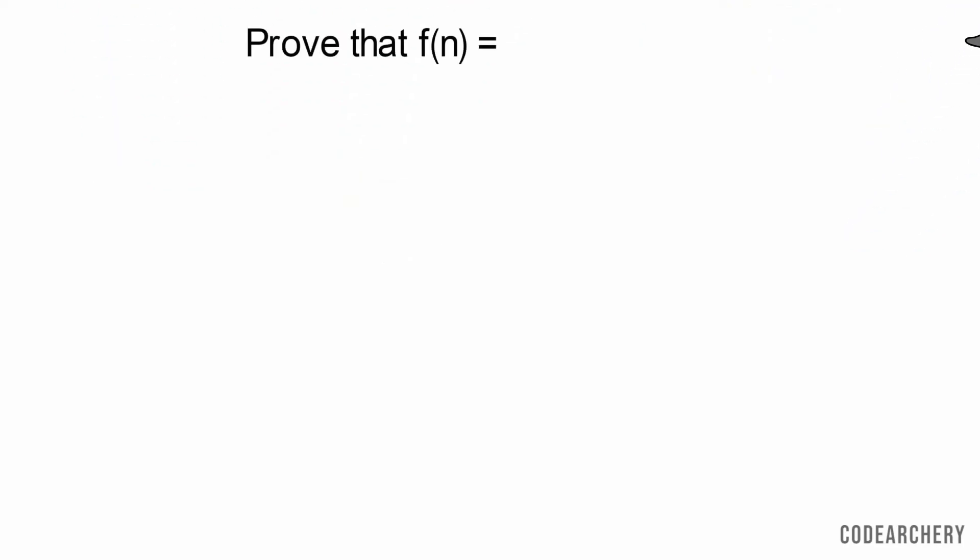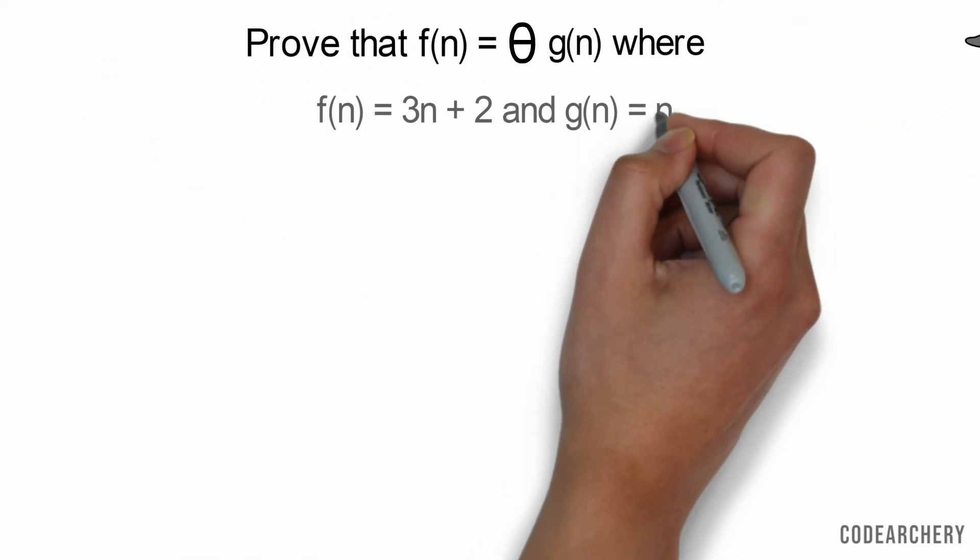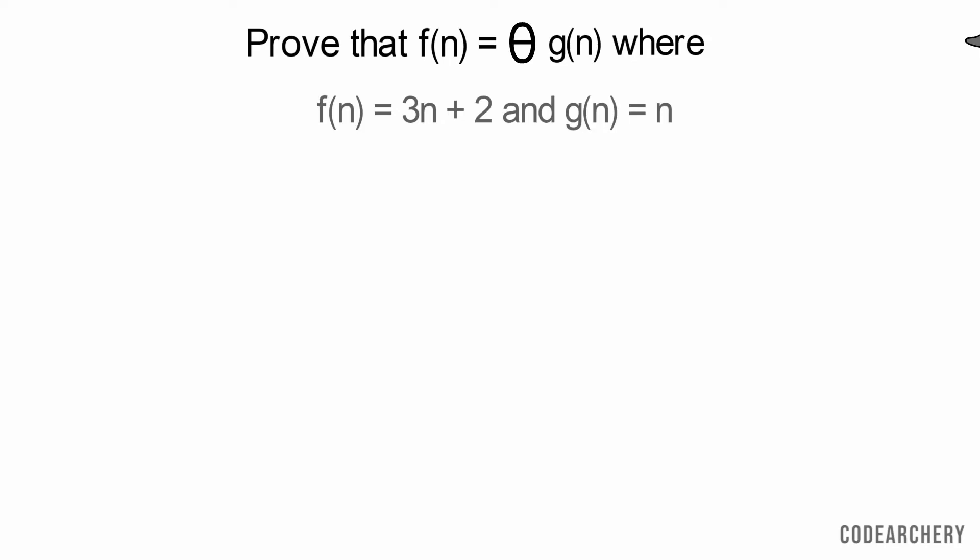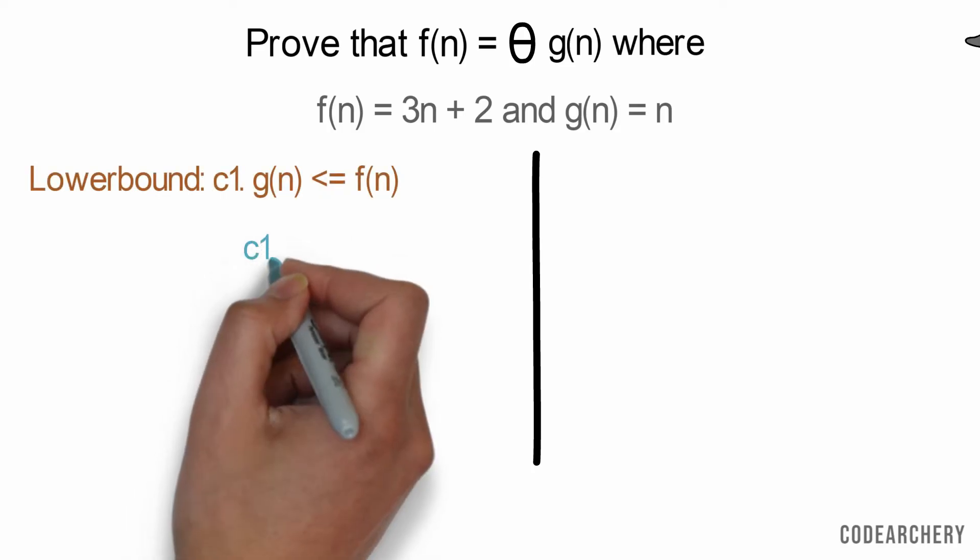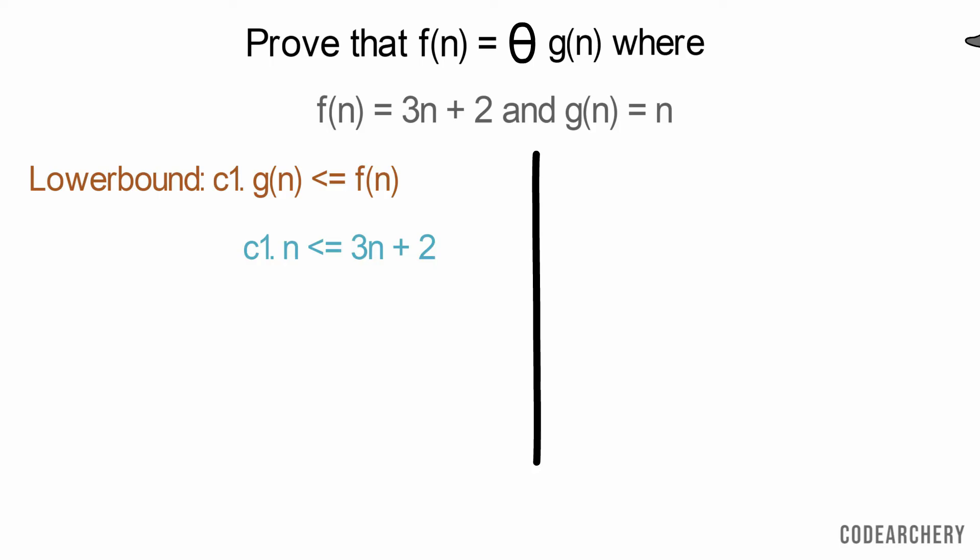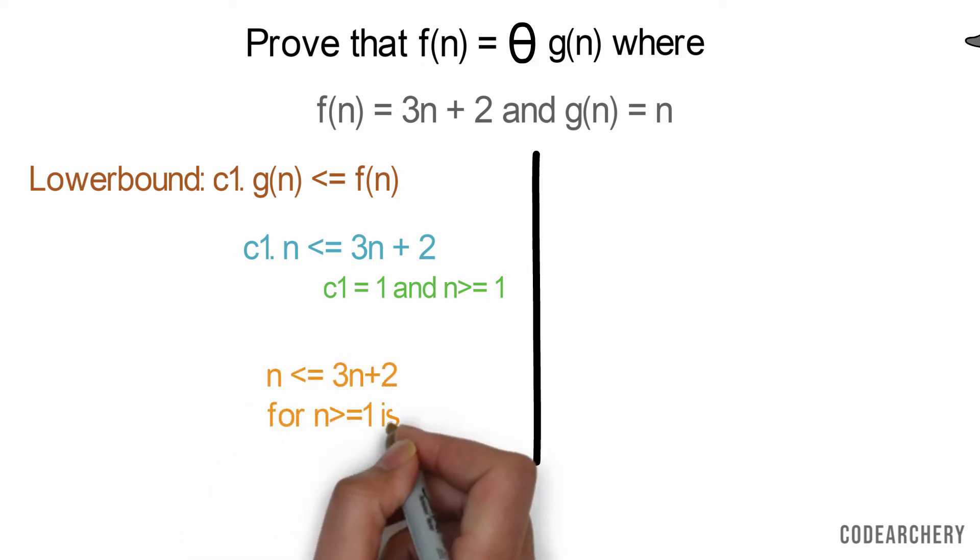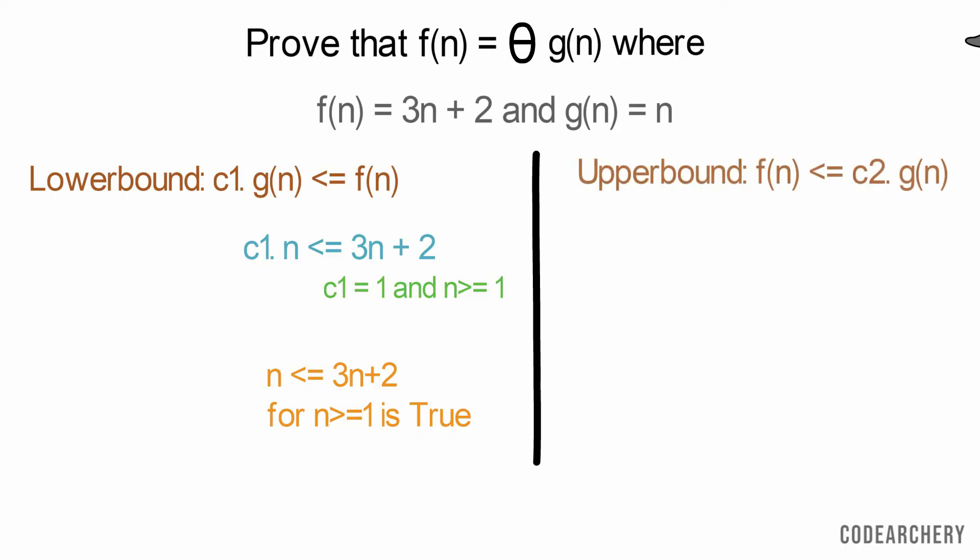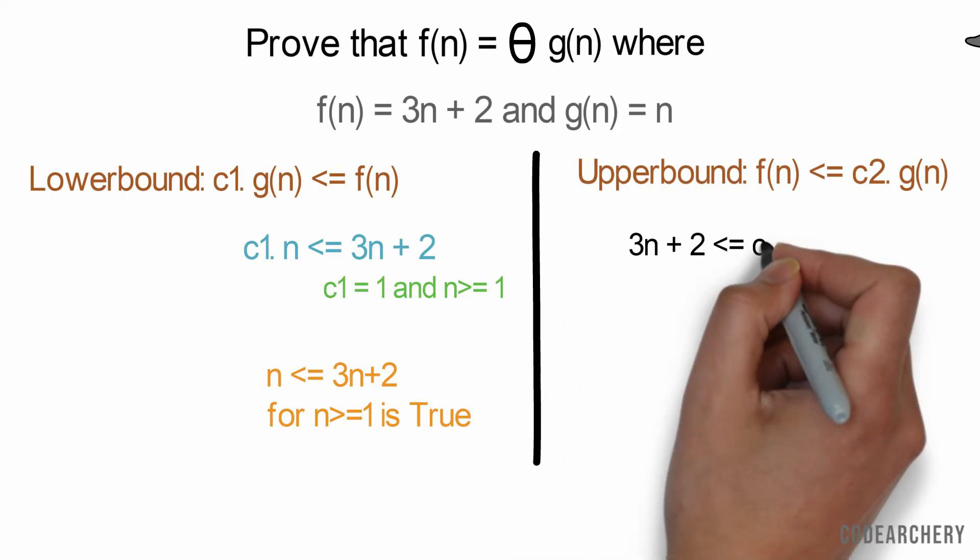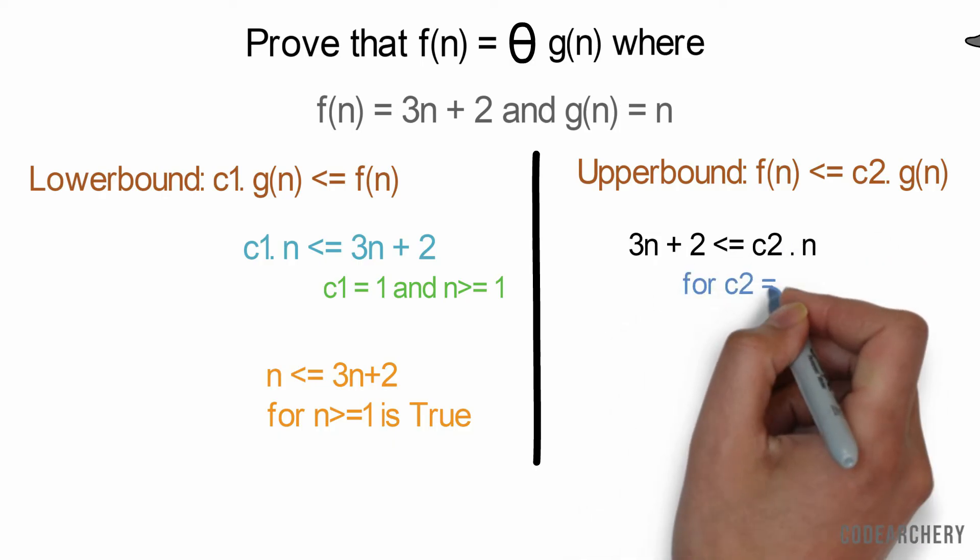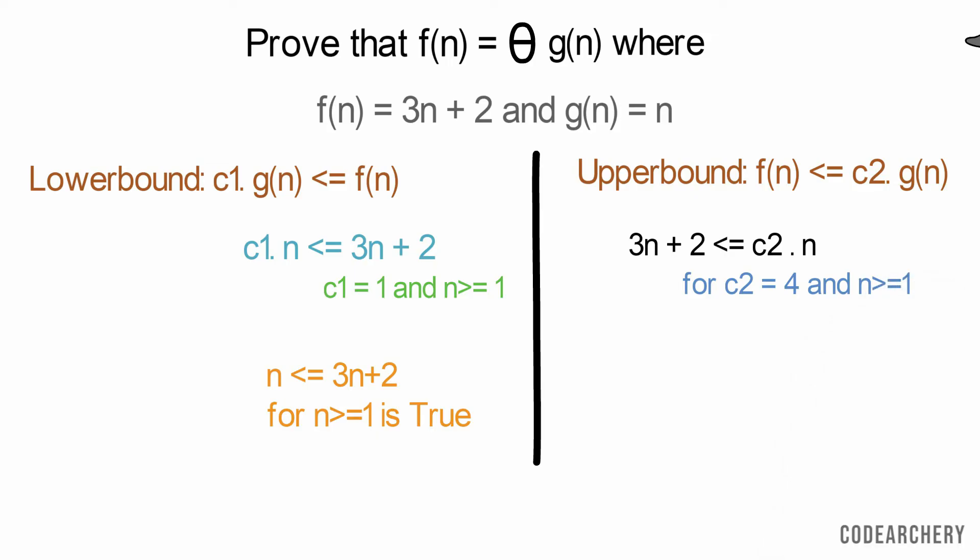Let's understand by an example. We have to prove that 3n + 2 is Theta of n. Our approach is going to be the same. We'll stick to the definition. First, we'll try to find the lower bound. So c₁ times n is less than or equal to 3n + 2. So if you do a little bit of trial and error, for c₁ equals 1, this equation holds true for all values of n greater than or equal to 1. So n is less than or equal to 3n + 2 is true. So we have found the lower bound. Now the upper bound: 3n + 2 is less than or equal to c₂ times n. For values of c₂ equals 4, this equation is true for all values of n greater than or equal to 1. Now we have also found an upper bound. Now we can say that f(n) is Theta of g(n), that is 3n + 2 equals Theta of n.